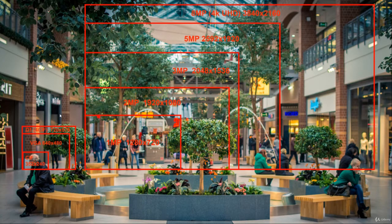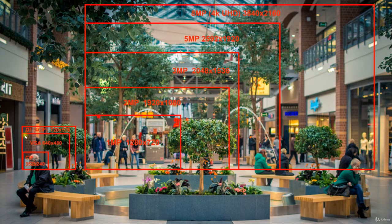Not every camera had D1 resolution at the time — a lot of them were using SIF. You also had VGA, which is the old monitor resolution. Most of those DVRs had a VGA cable connection option, but as you can see from the picture, the resolution you get from a VGA cable is completely useless for contemporary CCTV, because an HD screen has a resolution of 1920 by 1080 pixels.